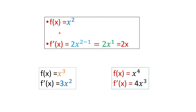Let us take an example. The first function is x power 2. The derivative: the power 2 comes to the beginning, and the new power is 2 minus 1. So x power 2 gives 2x power 1, which is simply 2x. The derivative of x power 2 is 2x.